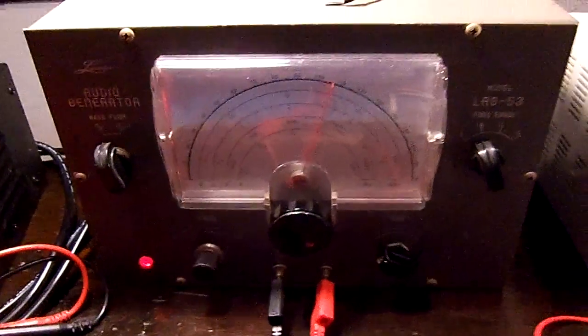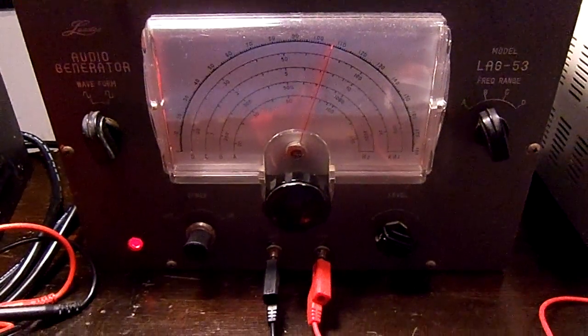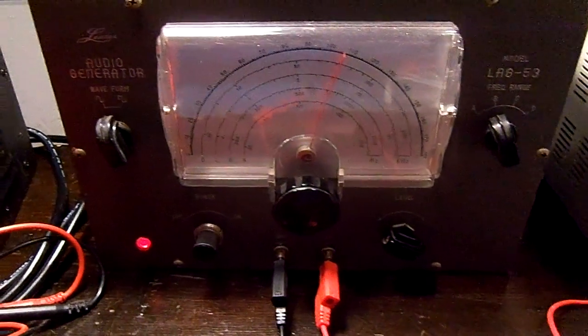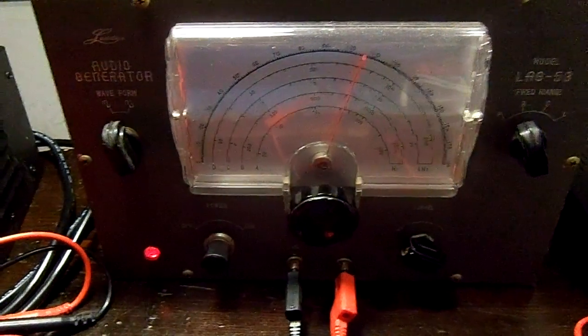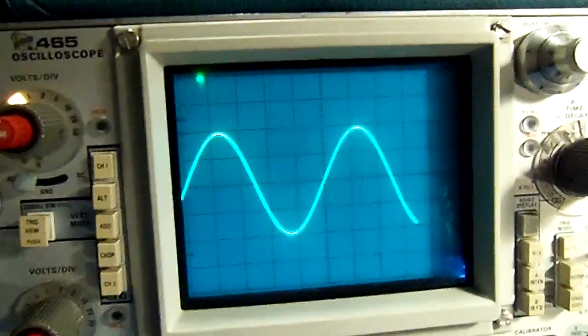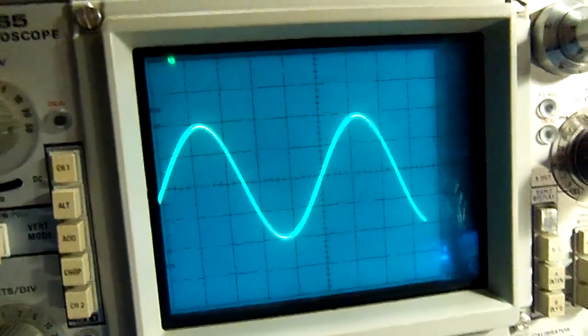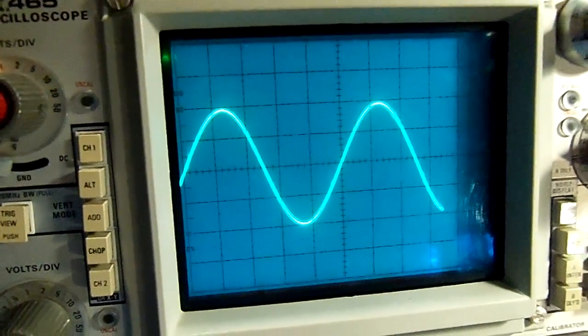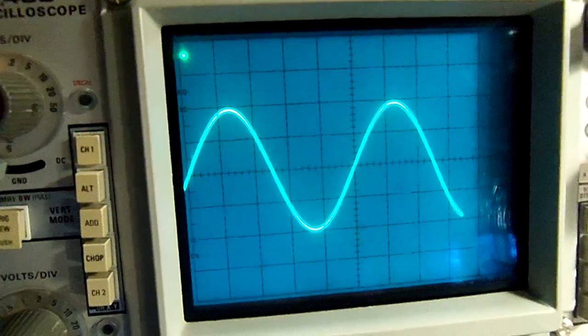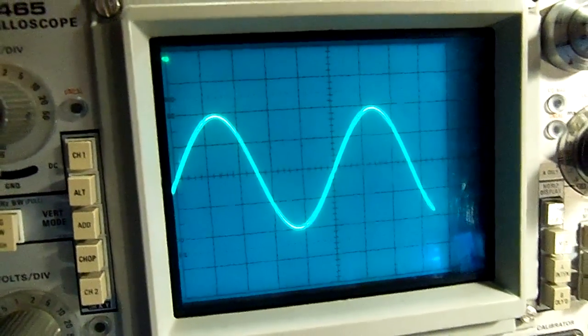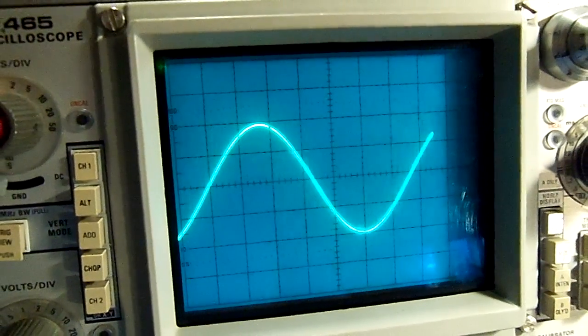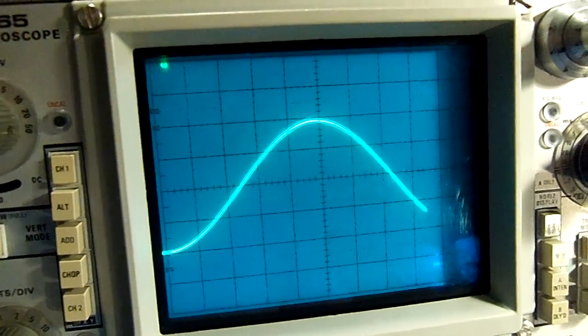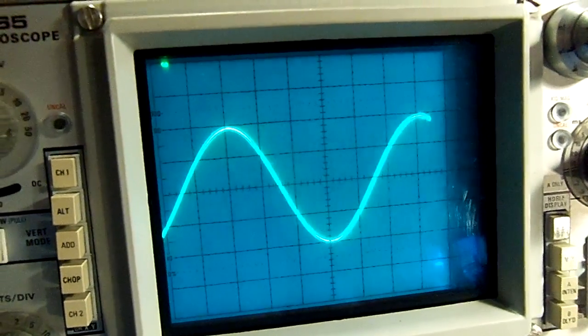So the signal generator here, Martin Digital of course, seems to be putting out what it's called for. The problem here is when I increase or decrease the frequency, the wave maintains its voltage.